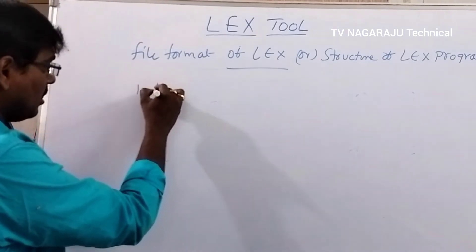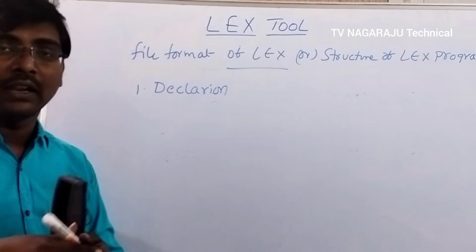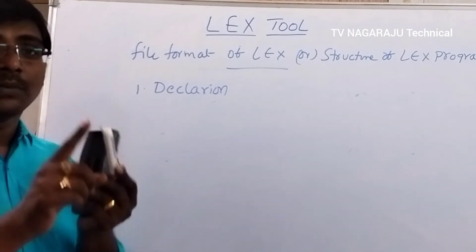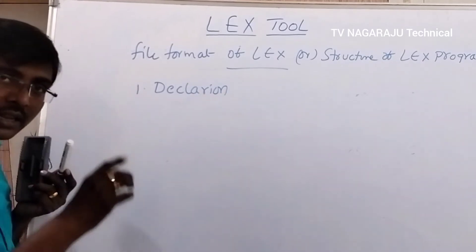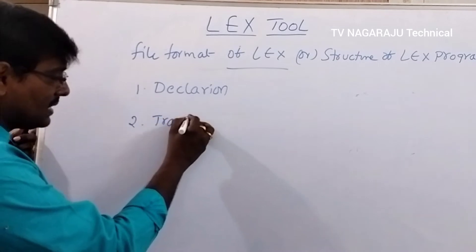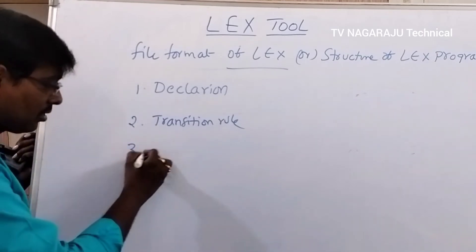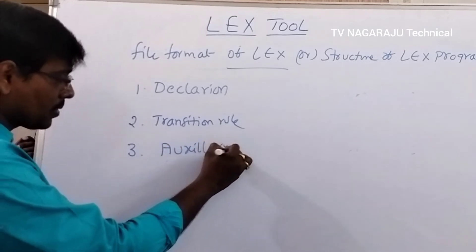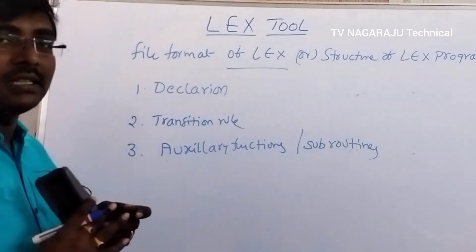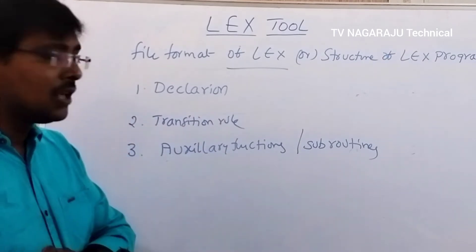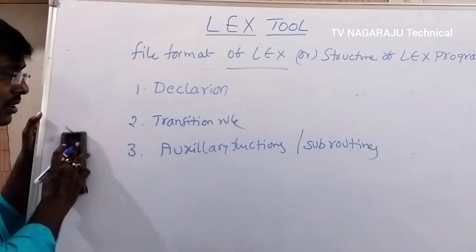The first section is called the declaration section — in some references it is called the definition section. For example, writing 'int a' is a declaration; if a equals 5, we are also initializing, which is a definition. The second section is transition rules — rules used for identifying a particular token action. The third section is auxiliary functions, also called subroutines, which are the functions used in the program.